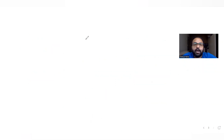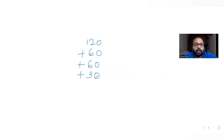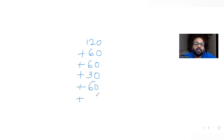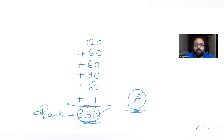Adding all the words before SUCCESS: 120 (starting with C) + 60 (starting with E) + 60 (SC...) + 30 (SE...) + 60 (SS...) = 330, plus 1 for SUCCESS itself gives 331. The rank of the word SUCCESS is 331, which matches option A.